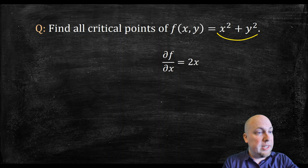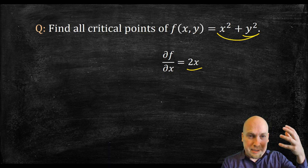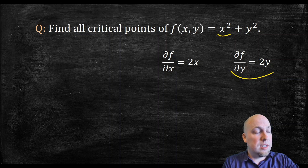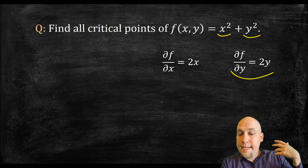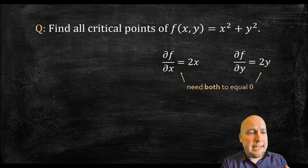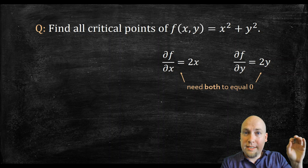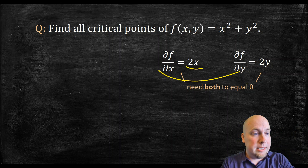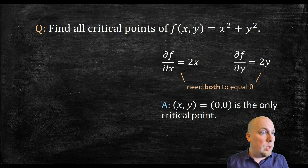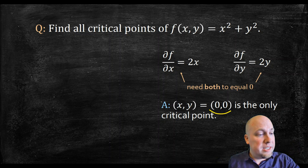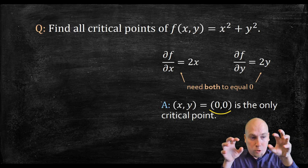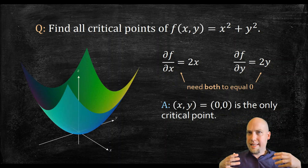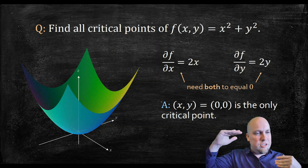The x partial derivative: the derivative of x squared is 2x, and the derivative of y squared is just zero, because with respect to x, y is a constant. Similarly, the y partial derivative is just 2y, because x squared is a constant with respect to y. We need both partial derivatives to be zero — not just one or the other. So we need 2x = 0 and 2y = 0, meaning both x and y must be zero. Therefore (0, 0) is the only critical point — the only pair of x, y values that make both partials equal to zero.